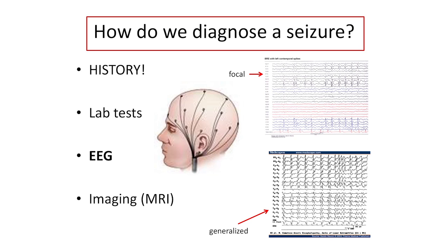You may be familiar with EEGs — brainwave tests where electrodes are applied in specific locations on the scalp and the electrical activity of the brain is recorded. These two EEG examples demonstrate the two major kinds: focal and generalized. In a focal EEG abnormality, you see spikes or abnormal discharges in one specific part of the brain. In a generalized kind of seizure, the entire brain is having spikes at the same moment.